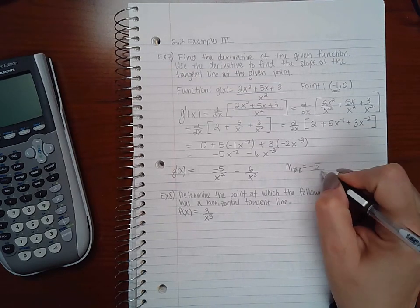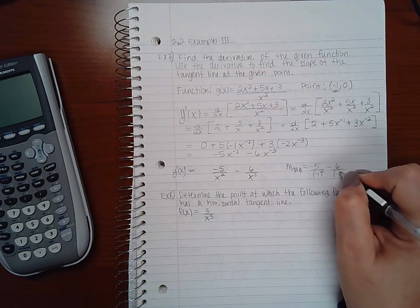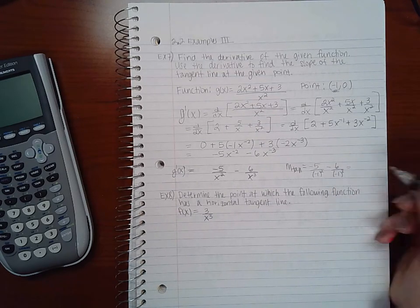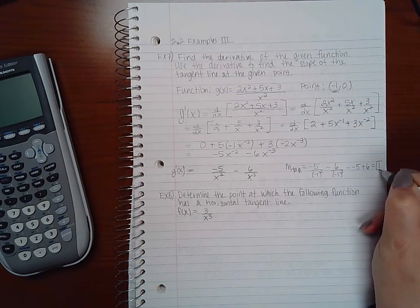So I have negative 5 over negative 1 squared minus 6 over negative 1 cubed. I can stick that in the calculator, but I end up with negative 5 plus 6, which is just 1.